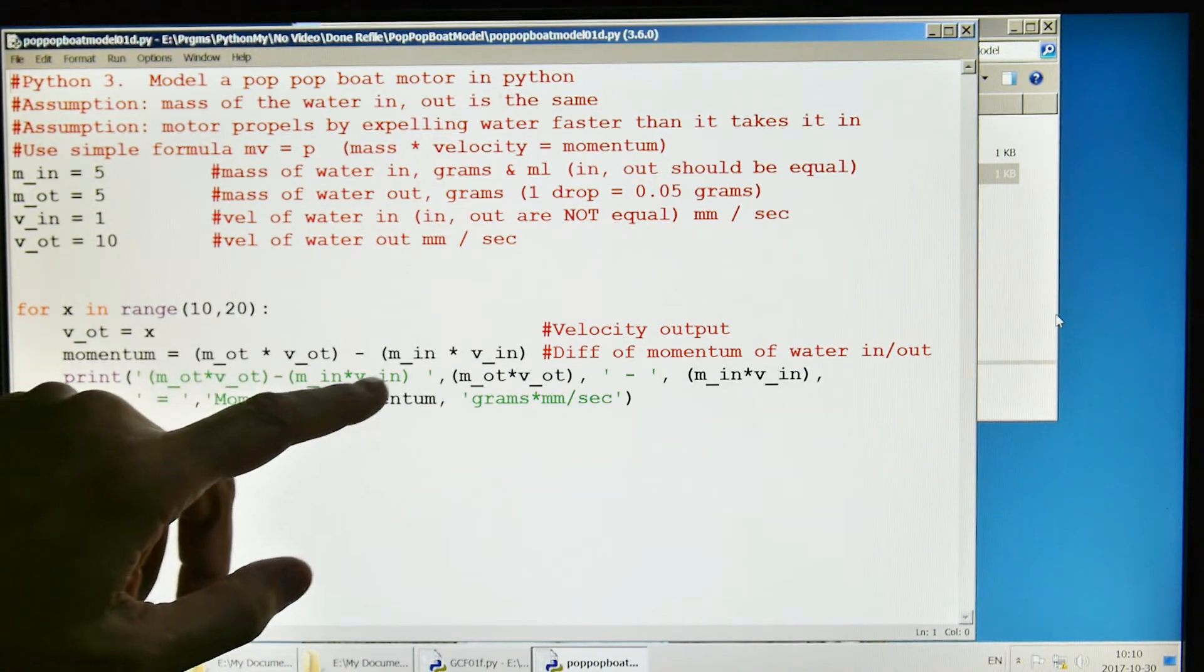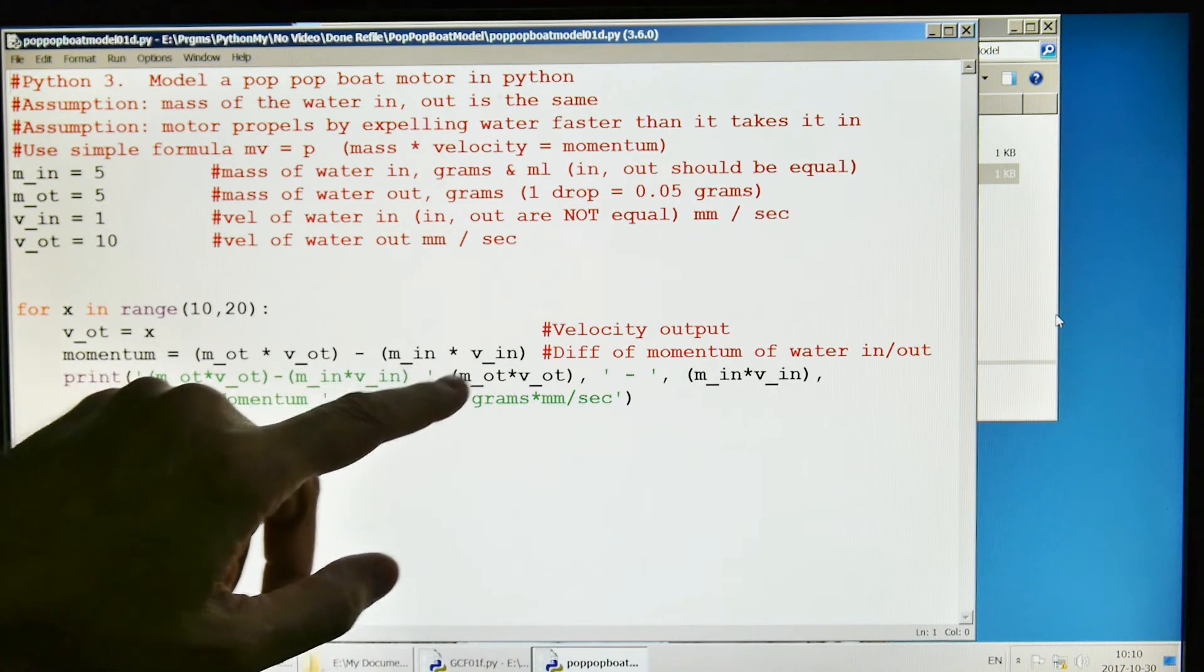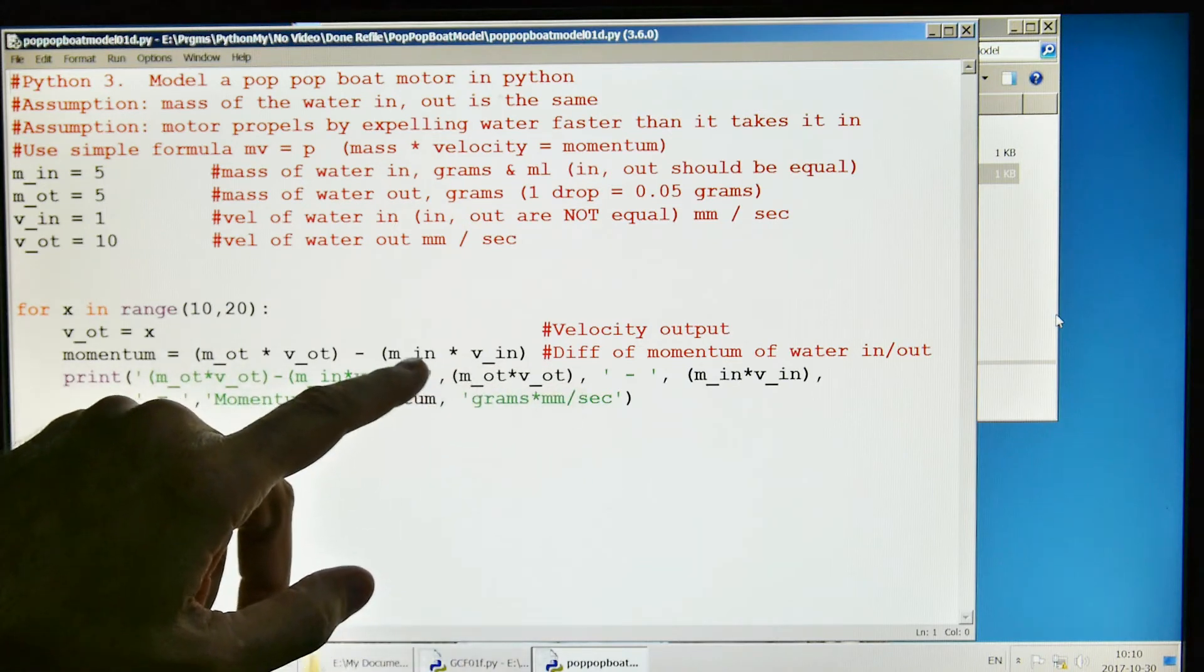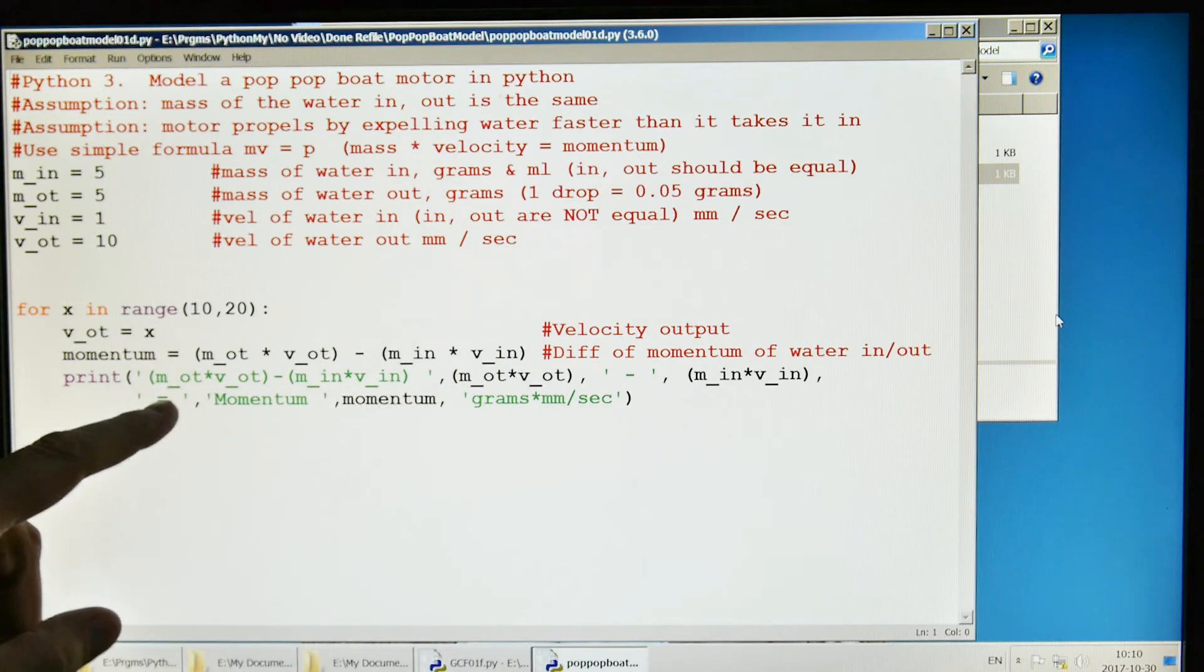This is mass of the water out times the velocity of the water out, so it's the momentum of the water shooting out minus the momentum of the water that comes back in. If this difference is positive, that means the boat should move forward. This is just the print statement that prints it out.